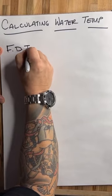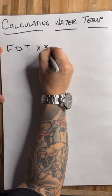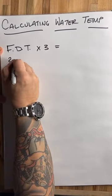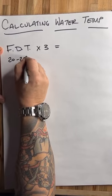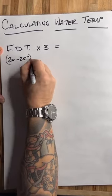FDT, that's the final dough temperature, whatever you desire, we're going to multiply that by three. Generally, our doughs are between 20 to 25 degrees Celsius.